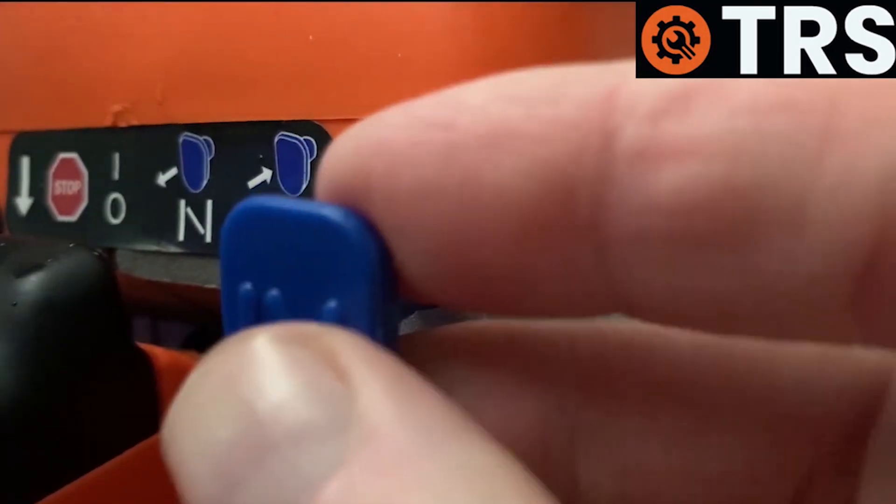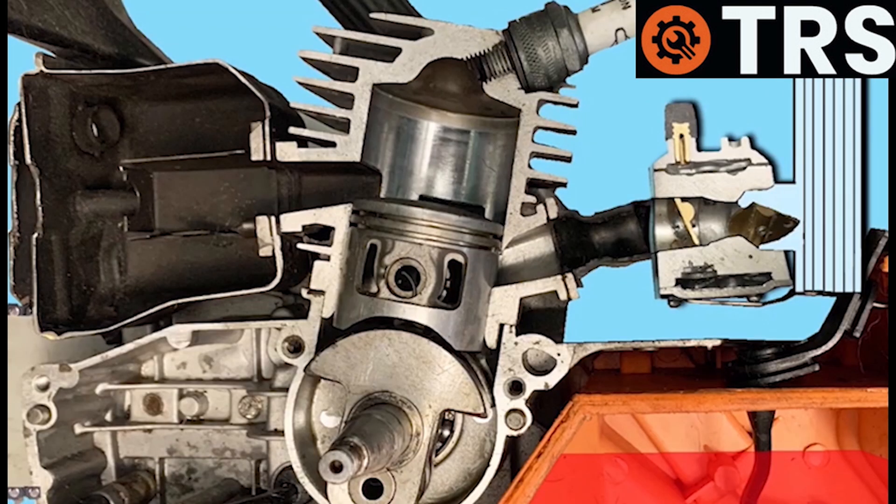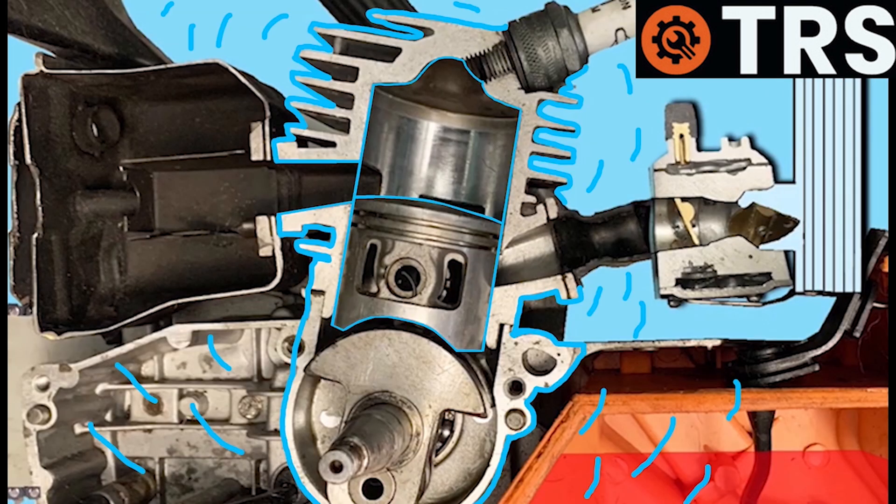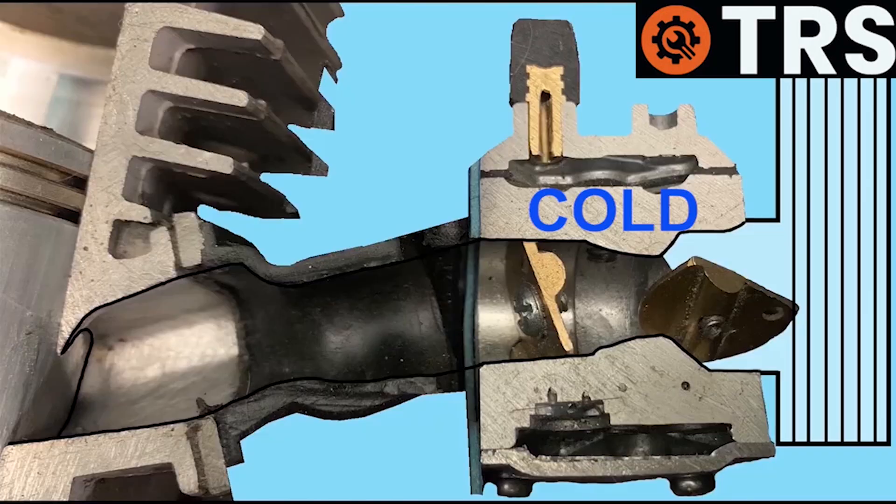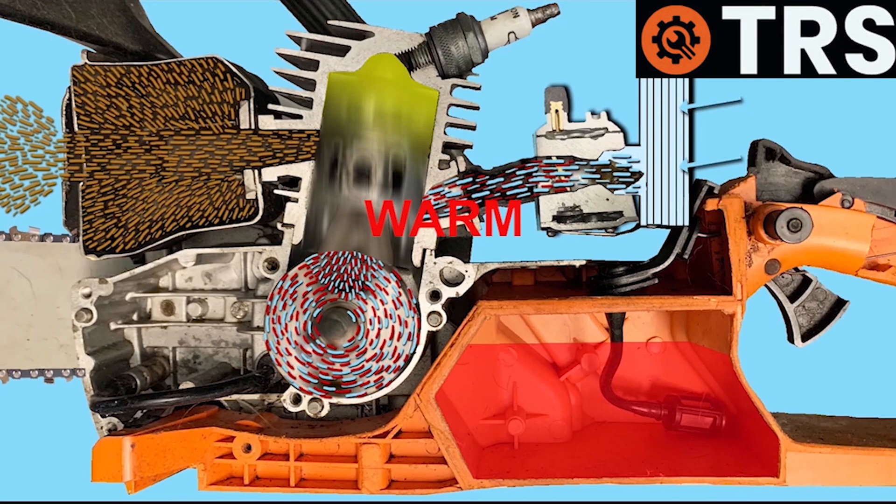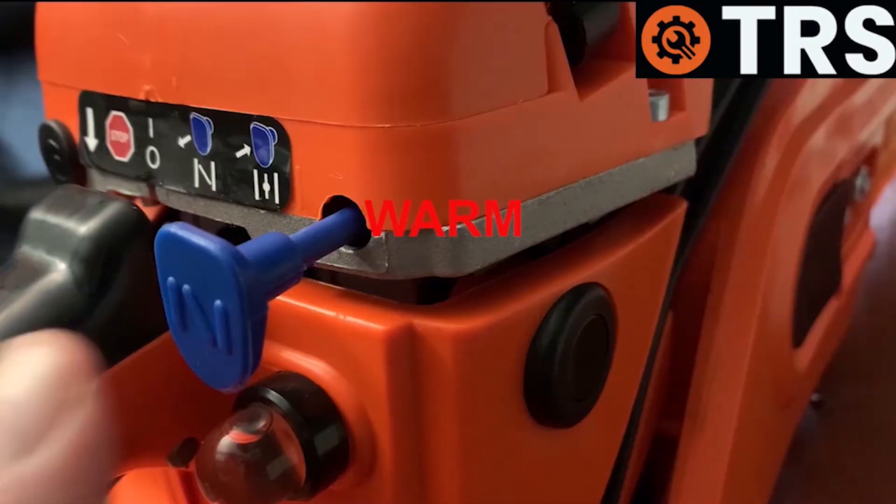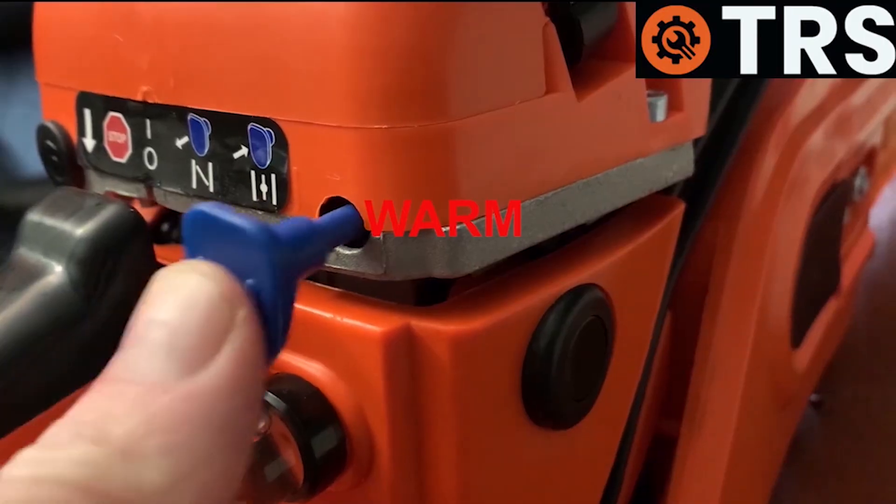And another reason can be just the operator using the choke when it's not meant to be used. So what I mean by that is when we initially come to the chainsaw and it's cold it hasn't been used we do need to use that choke from a cold start. But when we've used the chainsaw and the engine's warm and then we stop the chainsaw for a few minutes but then we start it up again we don't need to use the choke at this point.